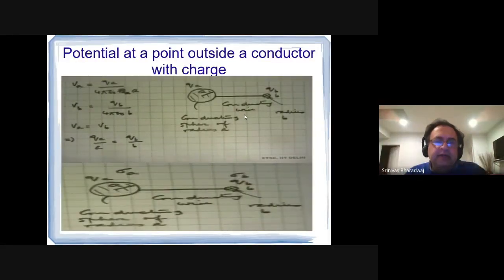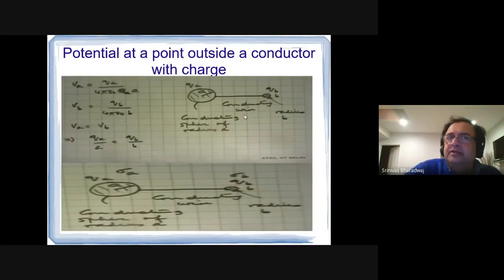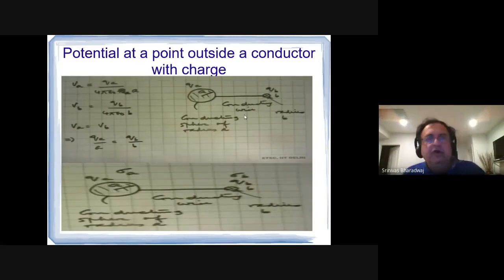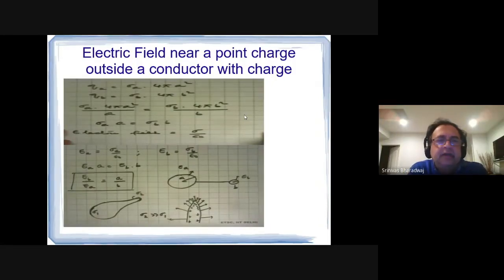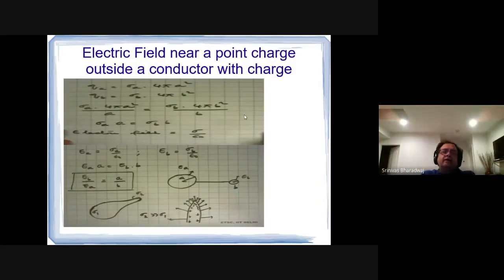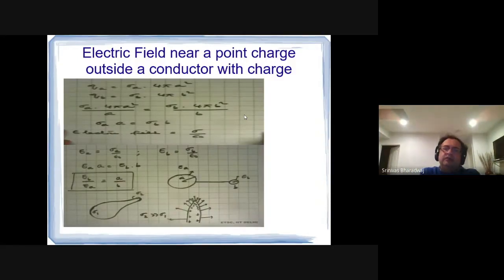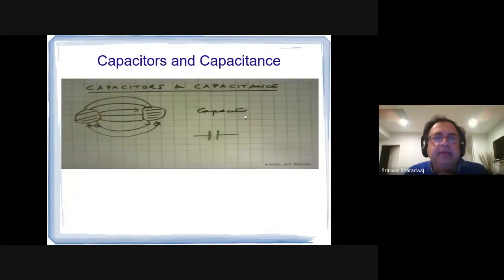The charge distributes in the conducting part between the inner and outer surfaces. The potential at a point outside a conductor with charge is found using Gauss's law. Once you know Gauss's law, you get E; once you know E, you get V. The electric field near a point outside a conductor is σ/(4πε₀r²) — just use Gauss's law. Very straightforward.